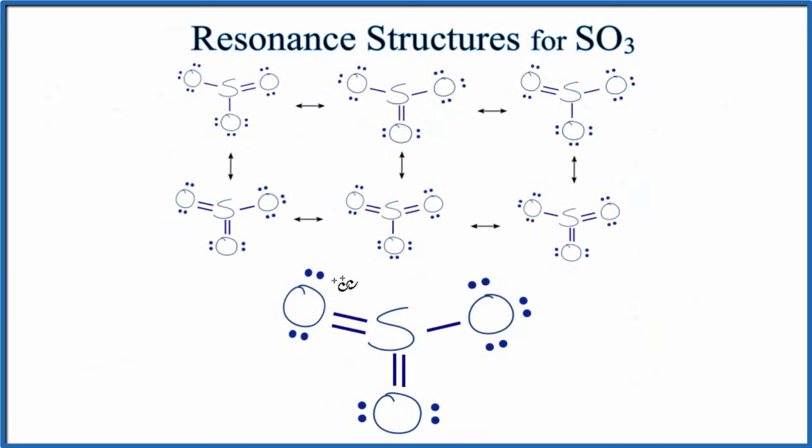We have these formal charges now. We could take these two electrons here and form yet another double bond. When we do that, all of our formal charges are zero. Based on theory and the rules we learned, this would be the best structure for SO3.